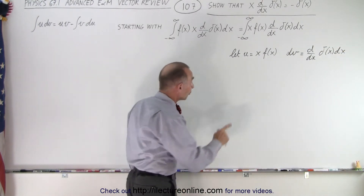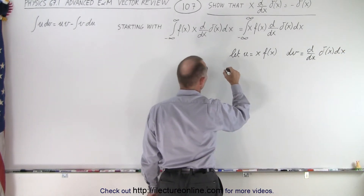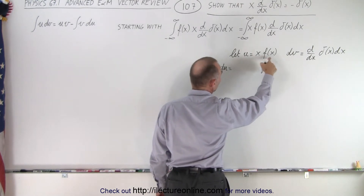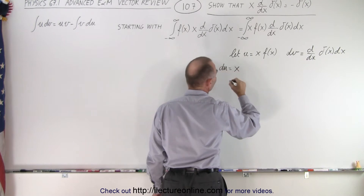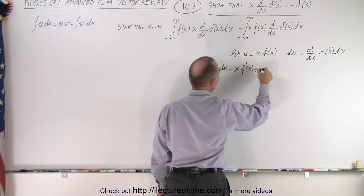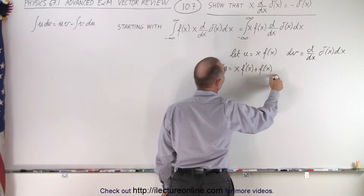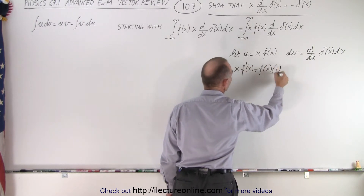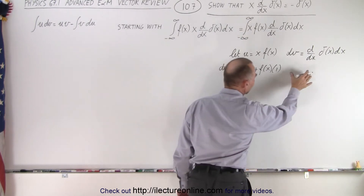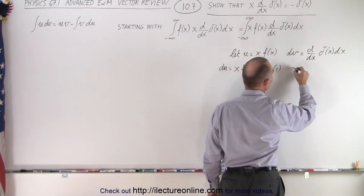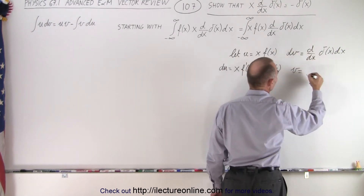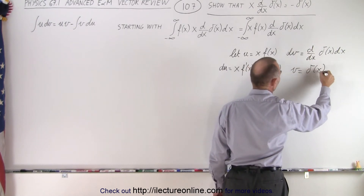Now, taking the derivative, du equals — since we have a product here — the first times the derivative of the second, which is f prime of x, plus the second, f of x, times the derivative of the first, which is simply 1. Then, integrating both sides of dv, v is simply equal to not the derivative of the delta function, but simply the delta function.